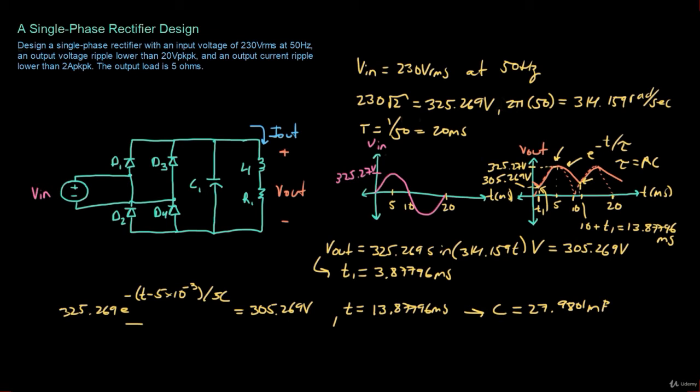Solving for C gives C = 27.9801 mF. So a capacitor of at least 27.98 mF guarantees that the output voltage ripple is 20 volts peak-to-peak or lower. In practical design, you choose the next higher standard value, so we select C = 28 mF, which guarantees the output voltage ripple stays below 20 volts peak-to-peak.